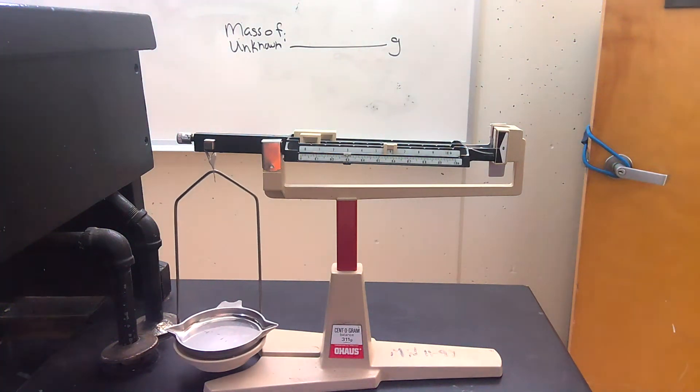Okay, so the first task that you would normally do in finding the density of an object is to figure out what the mass of your object is.